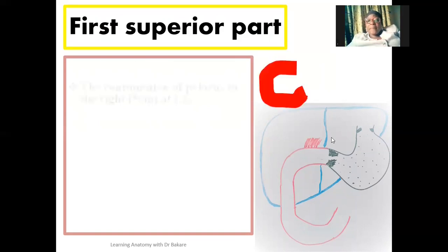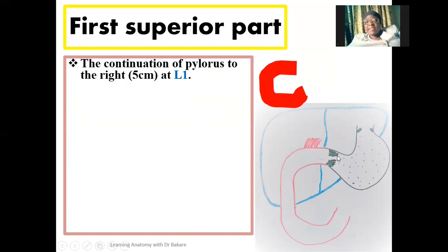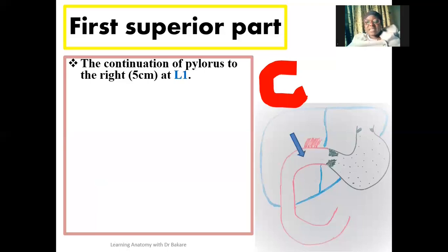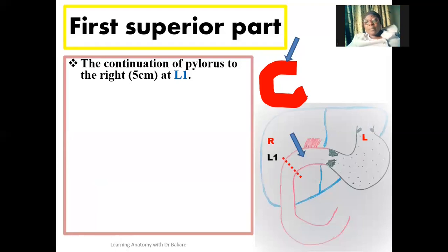For the first part — the first superior part — it is a continuation of the pylorus of the stomach, which is the terminal portion of the stomach. The first superior part is about 5 cm in length. We know the entire duodenum is 25 cm, so the first 5 cm is the first superior part. As it emerges from the pylorus it runs to the right, and this level corresponds to the first lumbar vertebra.